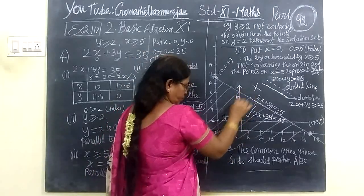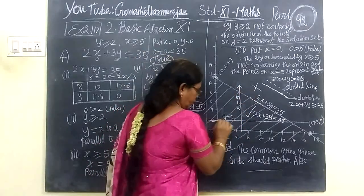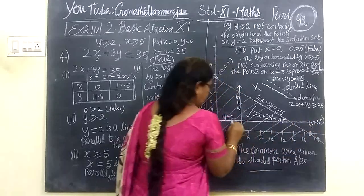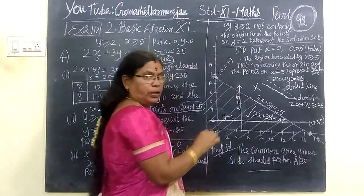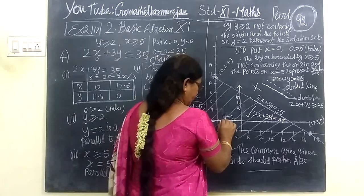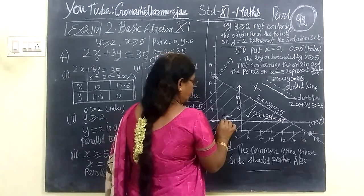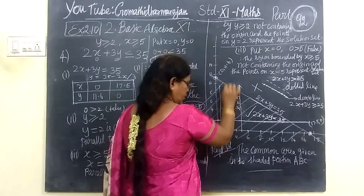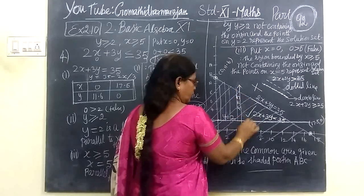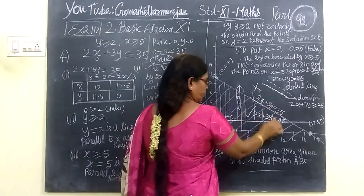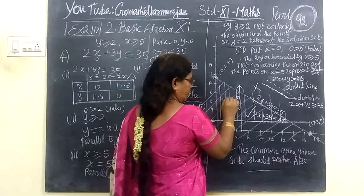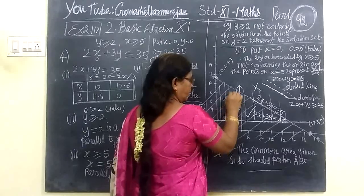Now this one is y equals to 2. Then y equals to 2 — put 0, 0, and we get this one. This is y equals to 2. This one is y greater than 2 in the graphical representation.